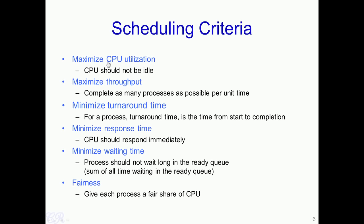The first scheduling criterion is CPU utilization — the scheduling algorithm should maximize CPU utilization, meaning the CPU should be idle for as little time as possible. The second criterion is throughput: scheduling algorithms should try to complete as many processes as possible per unit time. The third criterion is turnaround time, defined as the time taken for a single process from start to completion. The fourth criterion is response time: the time from when the process enters the ready queue to when the CPU begins executing its instructions.